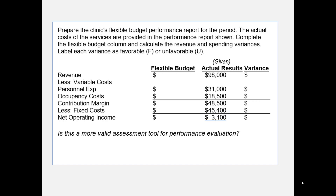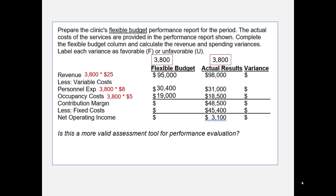There is a better way. Let's do this performance report based on the flexible budget compared to actual results. The flexible budget will be based on 3,800 patients and the actual results are also based on 3,800 patients. Revenue will be 3,800 times $25, or $95,000. Variable personnel expenses will be 3,800 times $8, or $30,400. Variable occupancy costs will be 3,800 times $5, or $19,000. The contribution margin will be $45,600. Fixed costs shouldn't change with activity and are budgeted at $45,000, giving net operating income of $600.